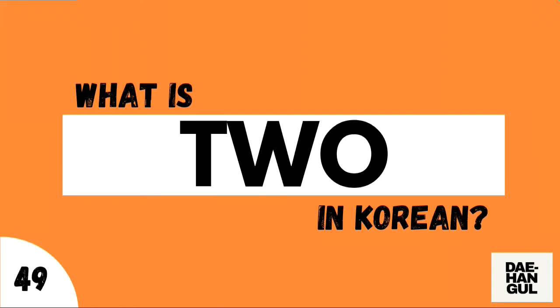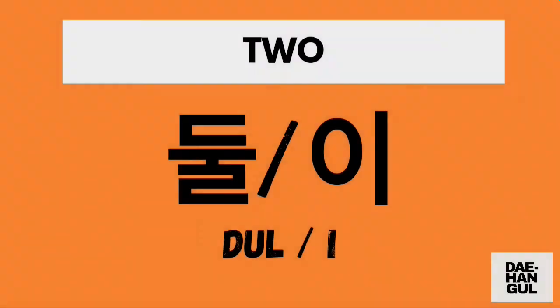What is two in Korean? There are two possible ways to say two in Korean. The first one is DUL. This is the native Korean number 2. And the second way of saying it is I. This is the Sino-Korean number 2.